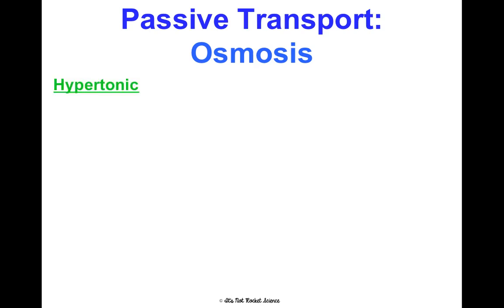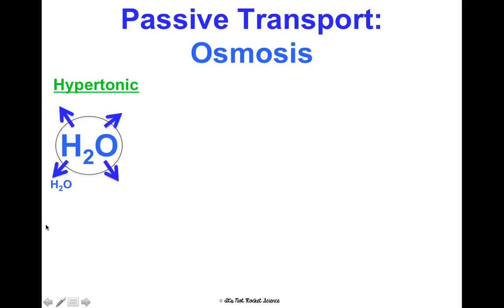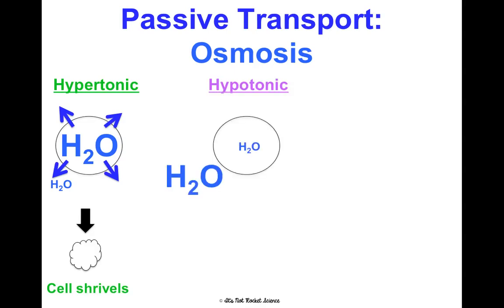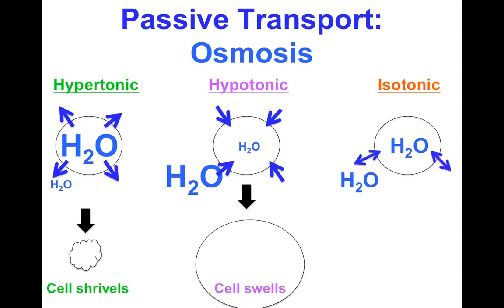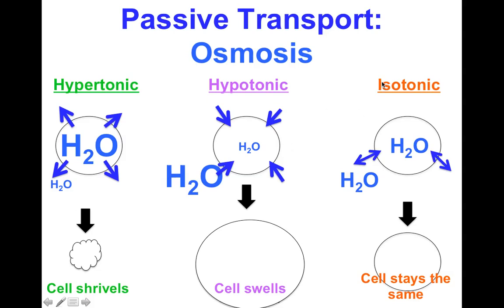Visually: hypertonic — more water inside, less outside, water rushes out, cell shrivels. Hypotonic — more water outside, less inside, water rushes in, cell swells. Isotonic — equal water concentrations, cell stays the same. A helpful mnemonic: think 'hypo' like a hippo — hippos are big, so the cell swells. And 'I' for isotonic means identical. Draw these diagrams in your notes to remember the differences.